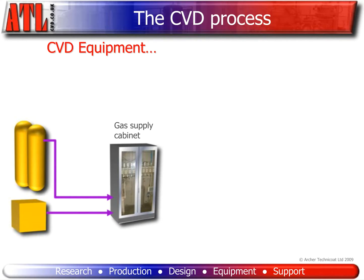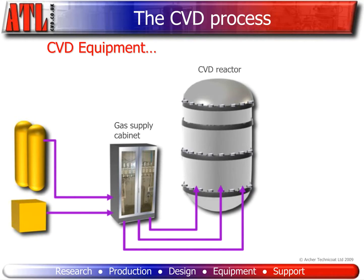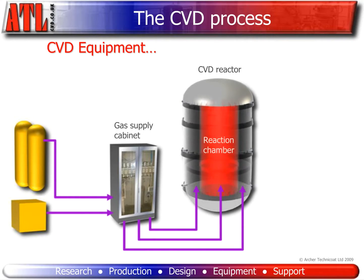The gas supply cabinet regulates the gases as well as heats and vaporizes the liquid. The reactant gases are then fed into the CVD reactor. Inside the CVD reactor is the reaction chamber and a heat source surrounding the reaction chamber. The heat source can be resistance, induction, UV, plasma, microwave, or laser.